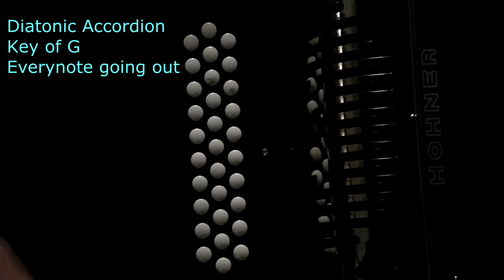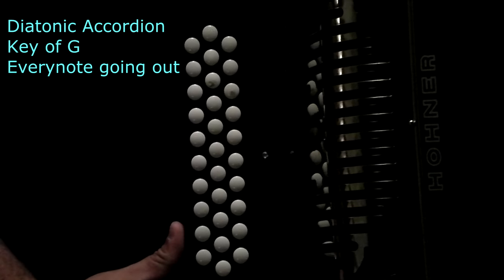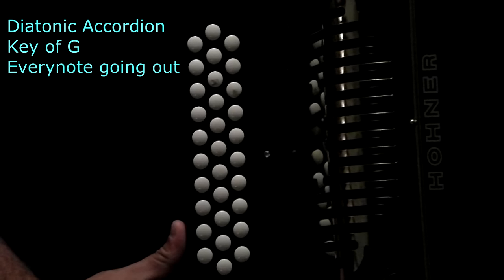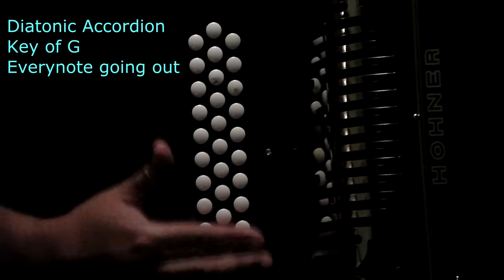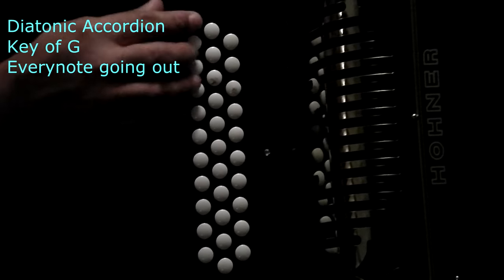So basically what I'm going to do is, this is going to be the out. So this is going to be pulling the bellows out and we'll go over every single note. I'm going to start with row one.